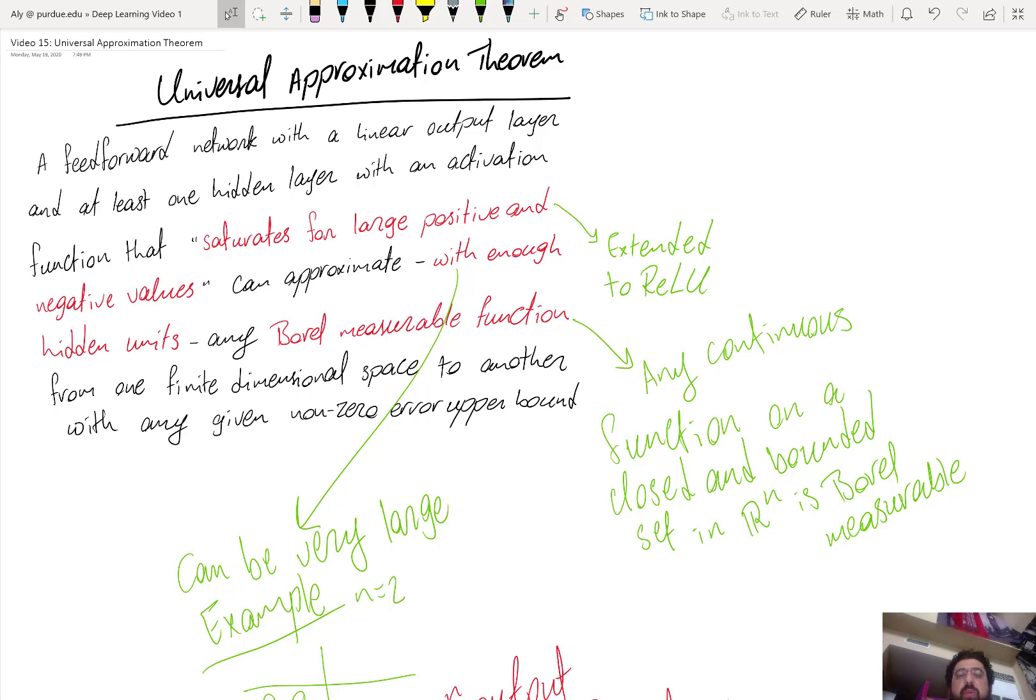Now that function has to be Borel measurable. That's a technical detail. So all I can say here is that most functions you will deal with in practice are Borel measurable. This is a measure theory technicality. And what suffices for you to know is that any continuous function on a closed and bounded set in Rn in the range of multidimensional real values that we deal with is Borel measurable.